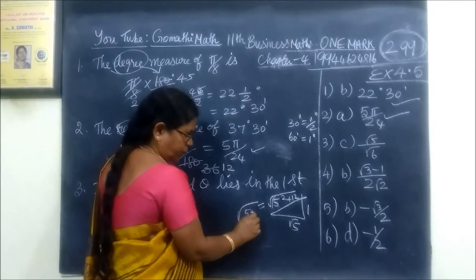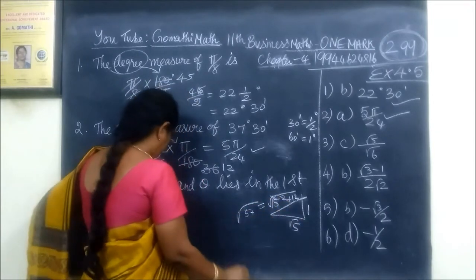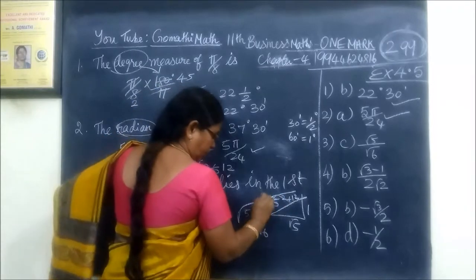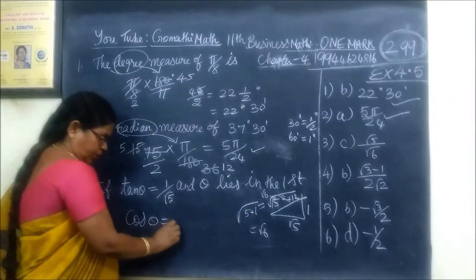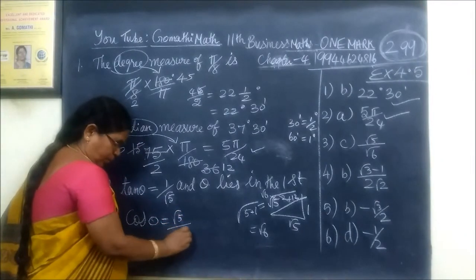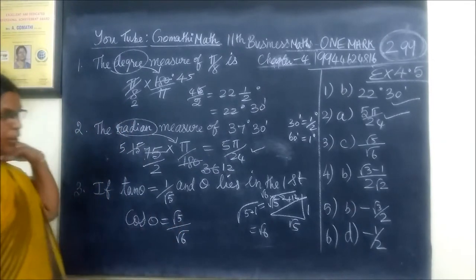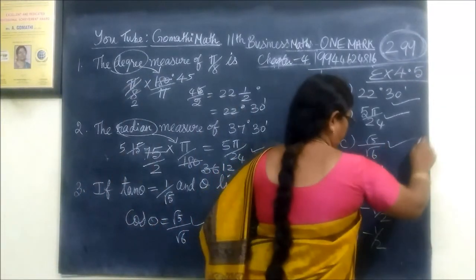Root 5 square is equal to 6. 5 plus 1 square, this is the value. So 5 plus 1 is root of 6. So cos theta is the adjacent by hypotenuse, the adjacent root 5 by hypotenuse root 6. So this is the answer root 5 by root 6.